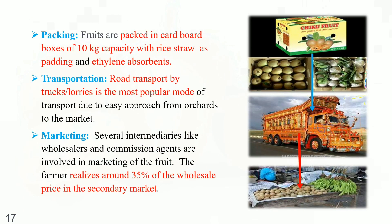Packing. Fruits are packed in cardboard boxes of 10 kg capacity with rice straw padding and ethylene absorbents. Transportation: Road transport by trucks is the most popular mode of transport due to easy access from orchard sites to the market. Marketing: Several intermediaries like wholesalers and commission agents are involved in marketing of the fruit. The farmer receives around 35% of the wholesale price in the secondary market.